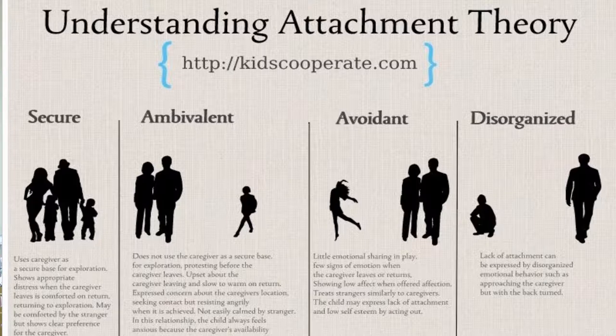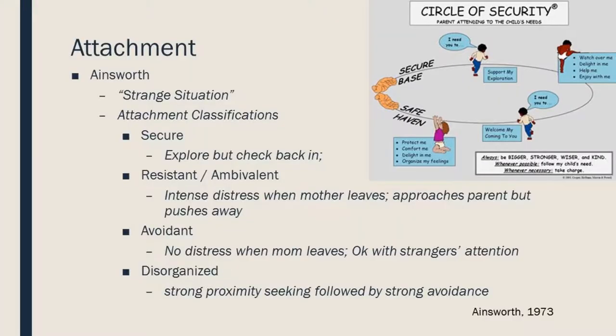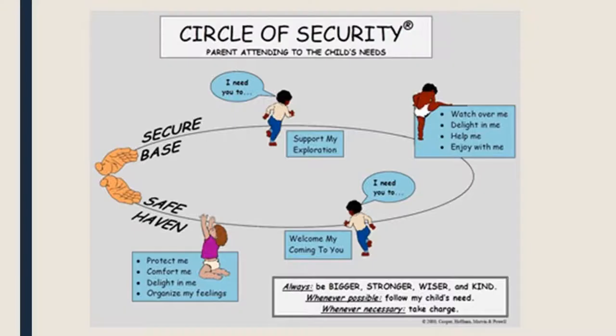Ainsworth furthered the research with this theory and is known for the Strange Situation. From the Strange Situation, we got the attachment classifications: secure, resistant, ambivalent, avoidant, and disorganized.